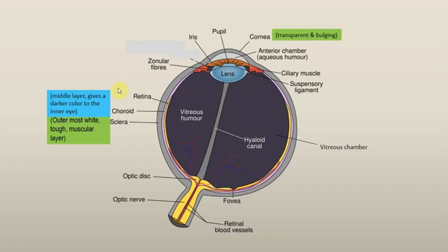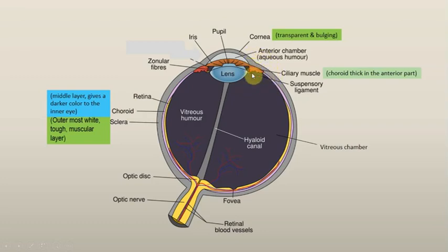The second layer is the middle layer, known as the choroid. It gives a darker color to the inner part of the eye. Towards the anterior side, the choroid layer becomes thick and forms the ciliary muscle or ciliary body. The ciliary muscle or ciliary body helps in keeping the lens in place — that is its function of holding the lens.